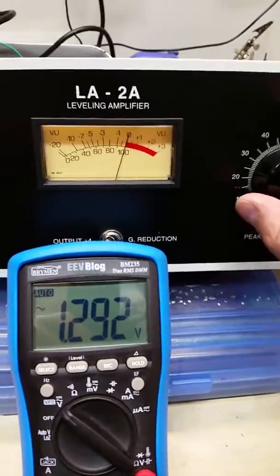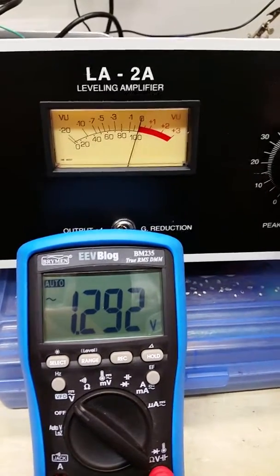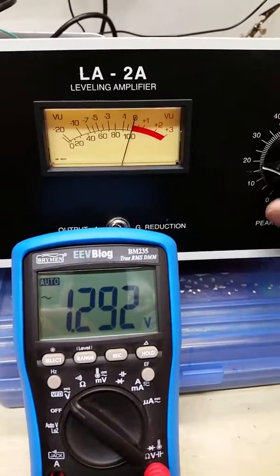Which was a minus 0.4. From 1.3 to 0.4 is a 10 dB drop. So as I turn the gain reduction up...